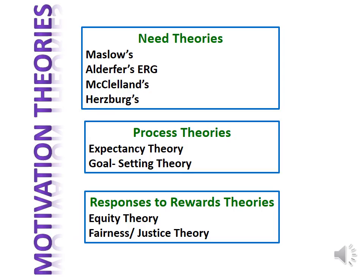When researchers try to categorize the motivation theories, this classification has been reached: starting with the need theories, which include many series. The second category is process theories, which include mainly expectancy theory and goal-setting theory. And finally, responses to reward theory, which includes equity theory and justice theory.